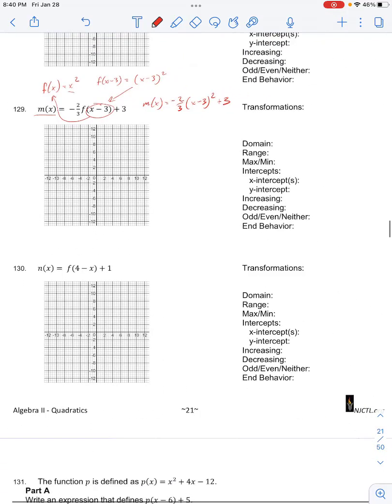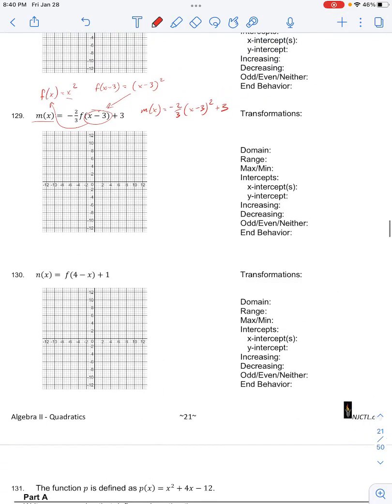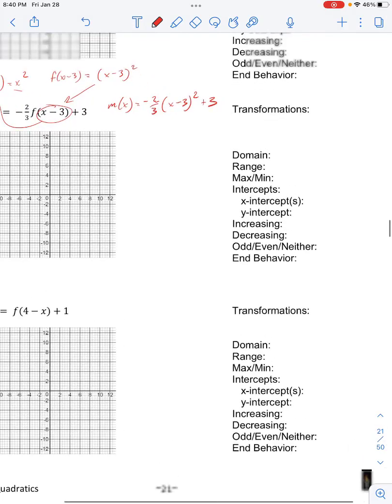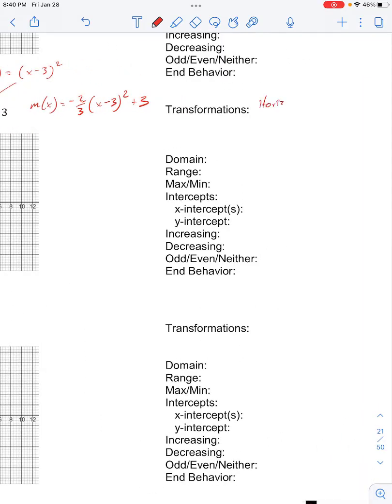So comparing this to our original x squared function, we have three transformations. We have a horizontal shift, we have a vertical shift, and we have a scaling factor.